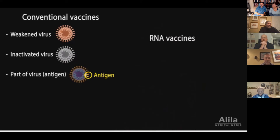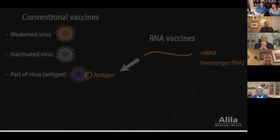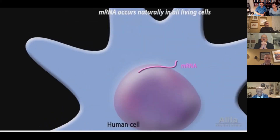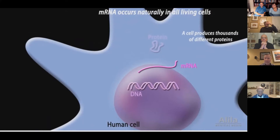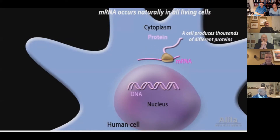RNA vaccines are a new generation of vaccines. Instead of a protein antigen, they contain mRNA—messenger RNA. As its name suggests, mRNA is basically a messenger carrying genetic information from DNA to protein. A human cell needs to constantly produce proteins based on genetic information in its DNA. Because DNA is located in the nucleus and protein synthesis occurs in the cytoplasm, an intermediate molecule is required. mRNA copies the information from DNA and brings it to the cytoplasm, where it is translated into protein.